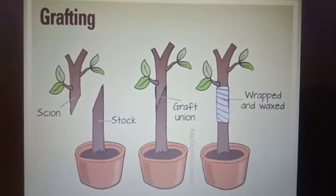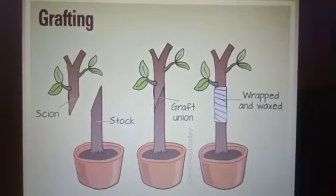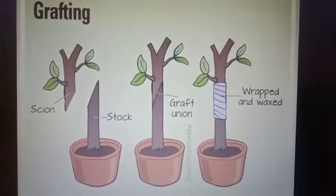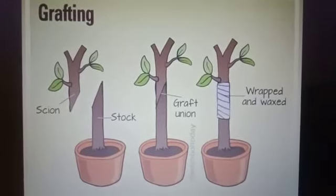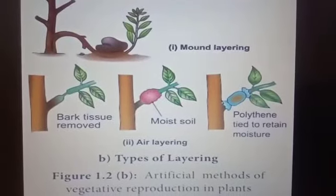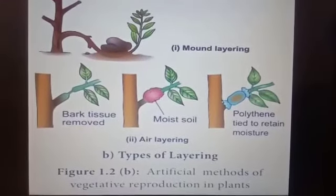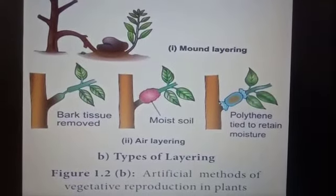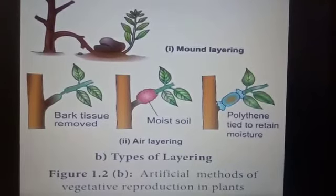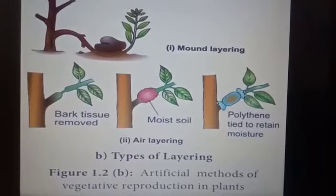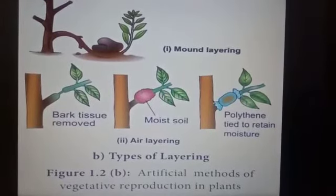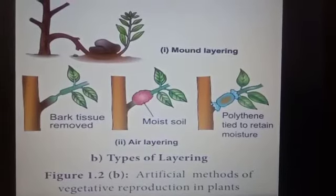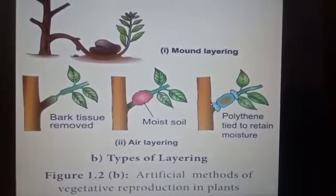The third method is layering. In this method, the branch of a plant is bent down to touch the ground. This branch is then covered with soil. After some time, roots start growing from the covered part, which is then separated from the original plant. This method is used to reproduce plants such as jasmine and croton.